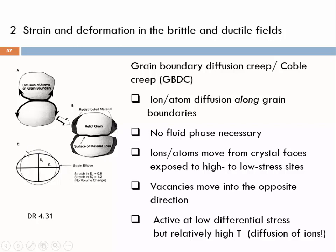We see here the strain ellipses. We see our marker circle for the initial undeformed state, and we see the strain ellipse with the longest and shortest axis indicating the deformed state. What we can see is that this is a volume-constant, an isochoric process — no volume change happens during the redistribution of material.